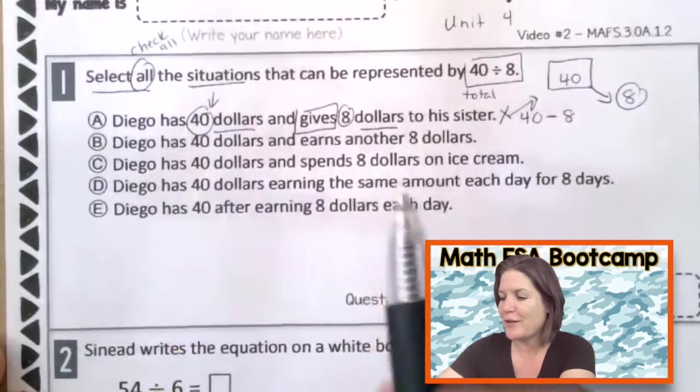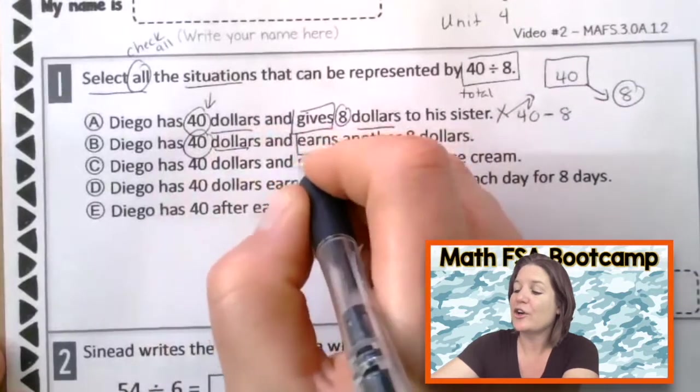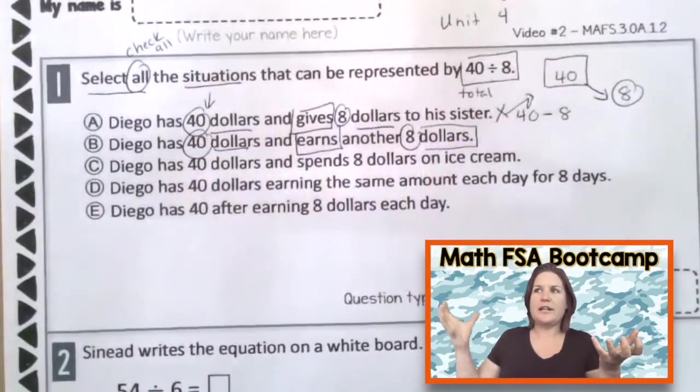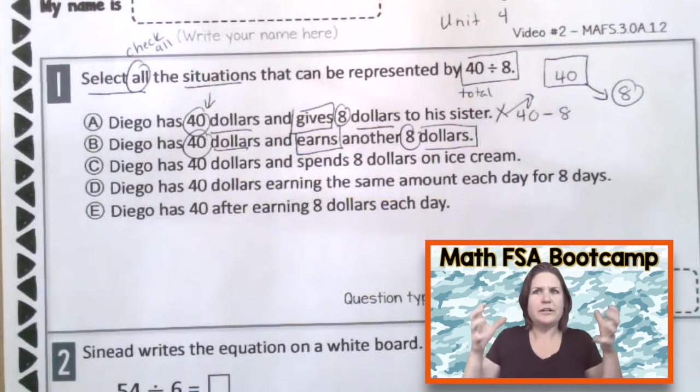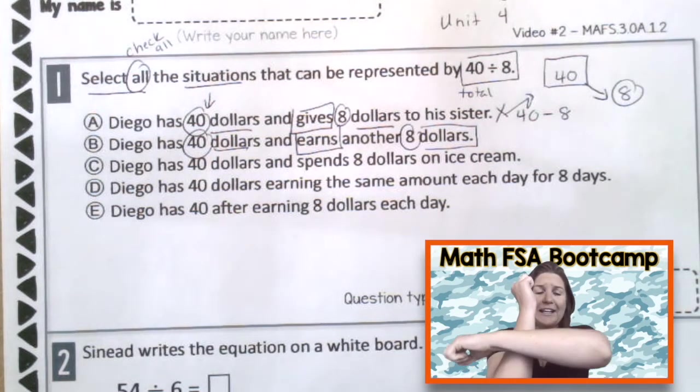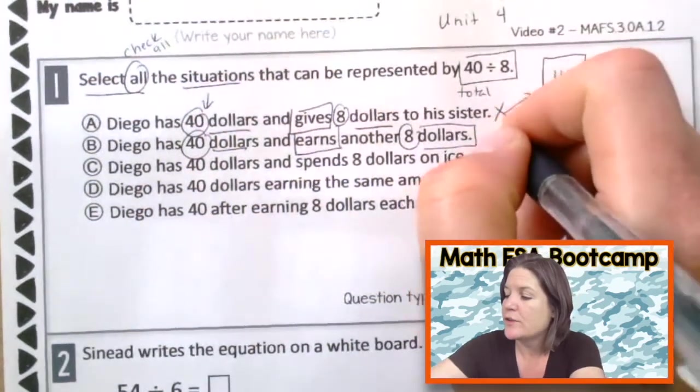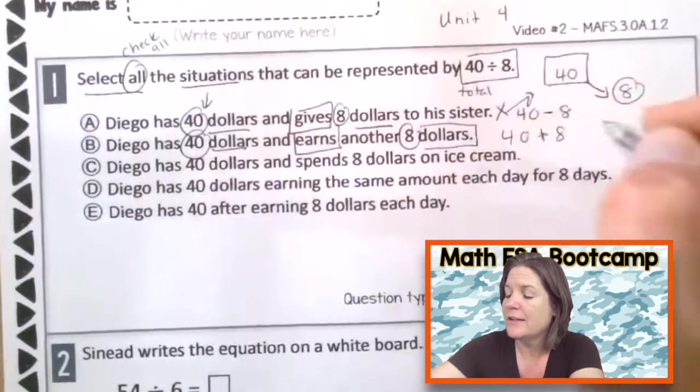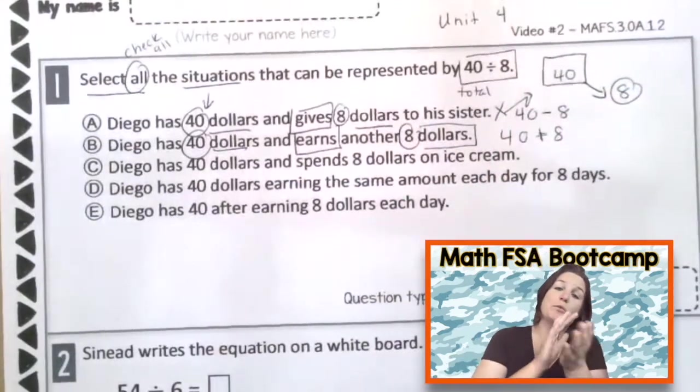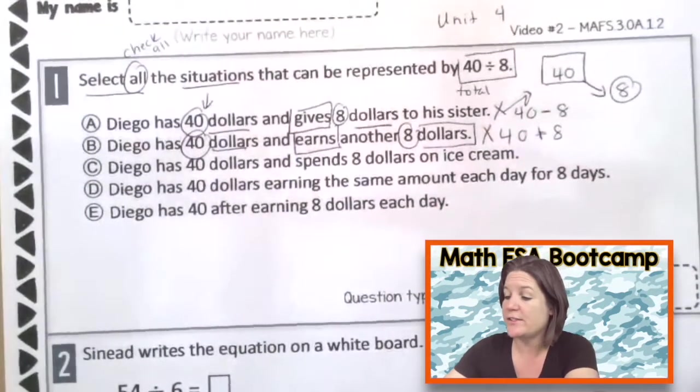Next one. I love these kinds of questions, by the way. Diego has $40 and earns another $8. So let's talk about that. He has $40 and he earns $8. He's joining the 8 to his 40. So which operation is that? Yeah, we're adding here. He has 40 plus the 8 and then he has 48 total. So 40 plus 8. Is that the same as 40 divided by 8? No, they kind of look similar, don't they? But we know that division means we're separating them into equal groups. So that is not going to work. That's not one of the choices.